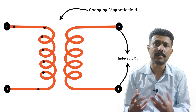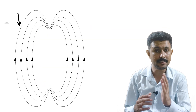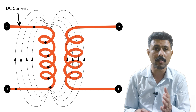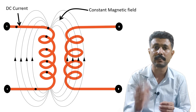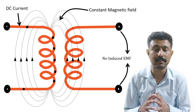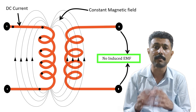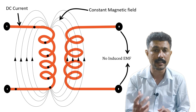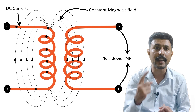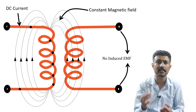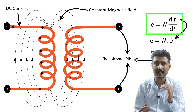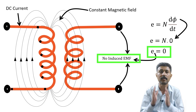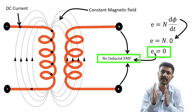Now let's see what happens if we give DC supply to a transformer. When we give DC supply to the primary winding, the magnitude of DC current is constant. A constant current produces a constant magnetic field, and a constant magnetic field will not induce EMF. The equation of induced EMF is E = N·dφ/dt, where dφ/dt is the change in flux with respect to time. When you give constant current it gives constant flux, so dφ/dt equals zero, and therefore we will not get any induced EMF on the secondary side.